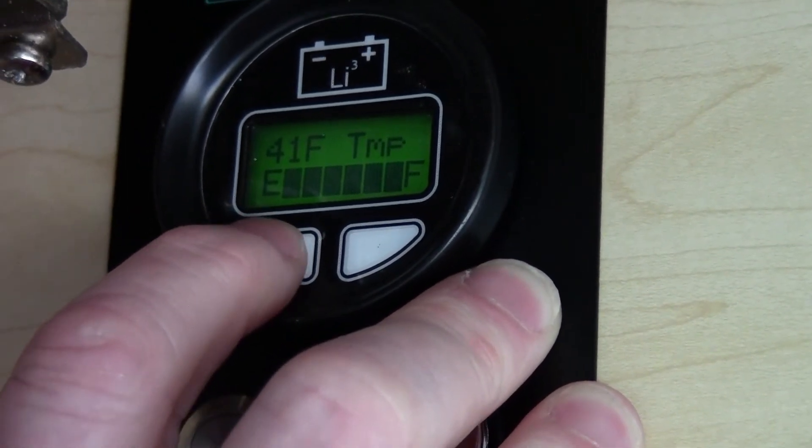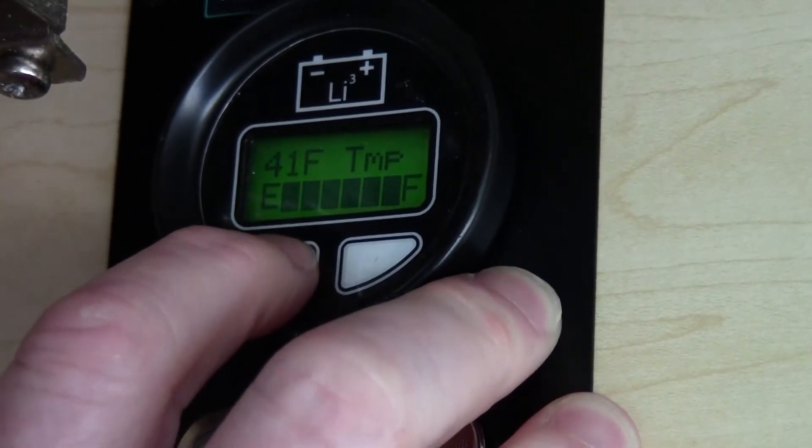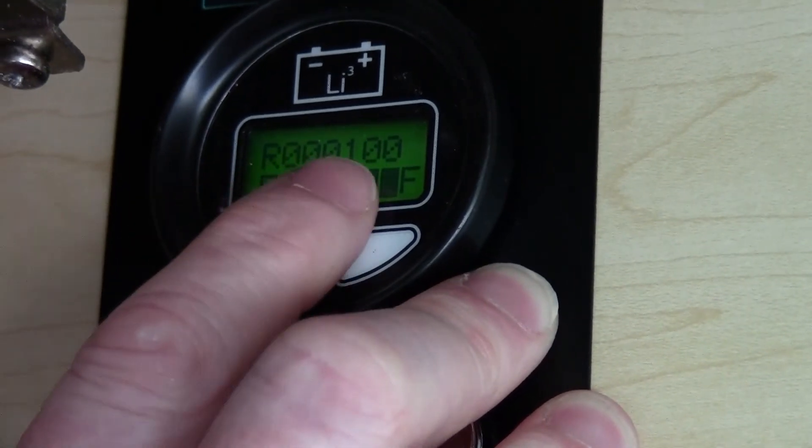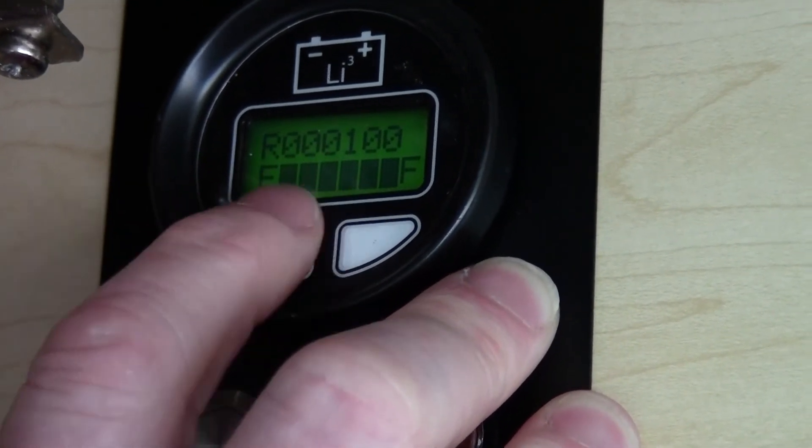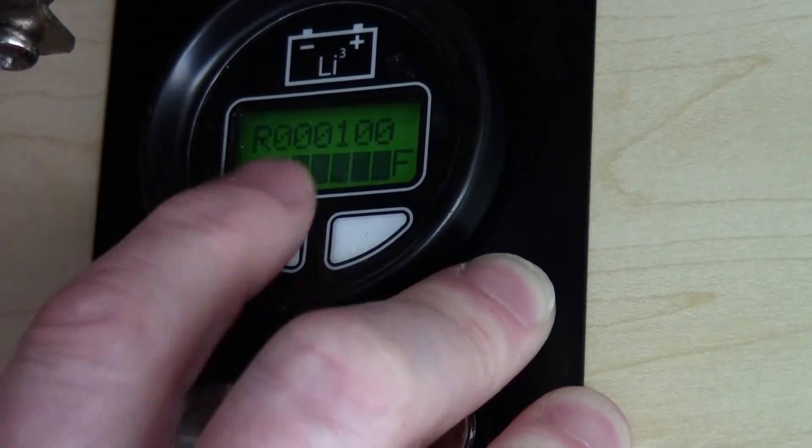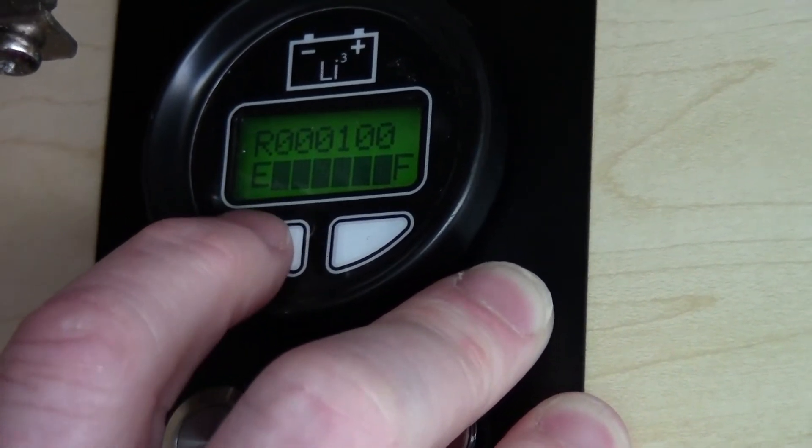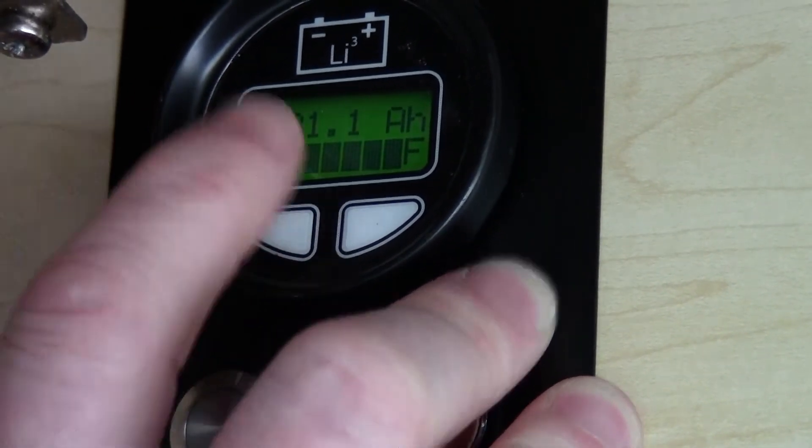41 degrees Fahrenheit. That's the battery temperature. This is a function code you'll use for troubleshooting. If you ever have to call tech support, that's the number they're going to be asking for. And now we're back to amp hours.